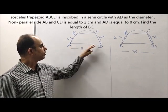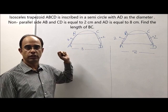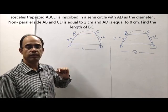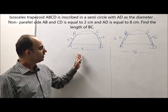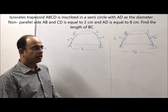AD is also the diameter of the semicircle whose length is 8, and the equal sides are 2 each. You need to find the value of BC. We will be solving this question by three methods. Let us start.